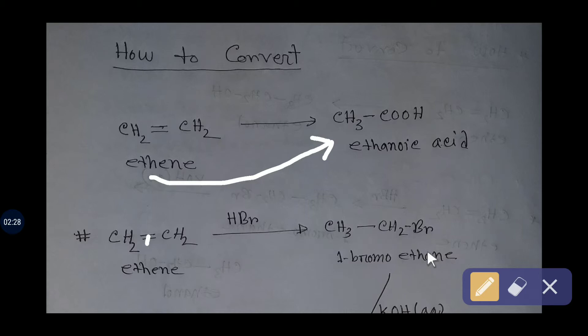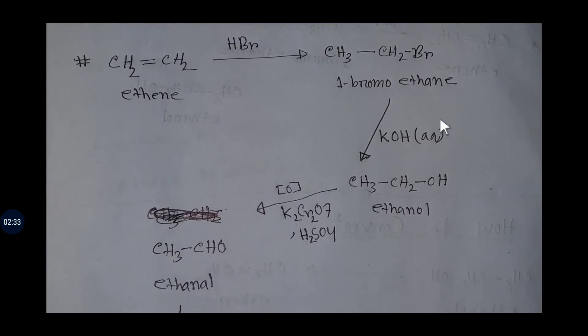bromoethane. If you add aqueous potassium hydroxide to this bromide, then bromide will be replaced by OH and you will get ethanol, which is alcohol. If you oxidize this ethanol by